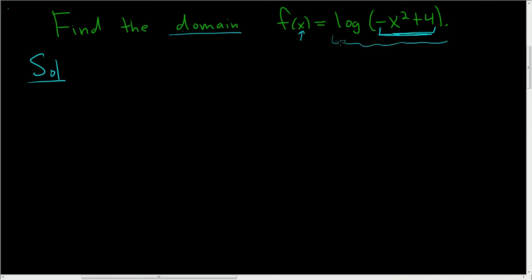This log makes sense if this is positive. So the first step is to take whatever is there, so in this case, negative x squared plus 4, and set it greater than 0. So we have to solve this inequality.